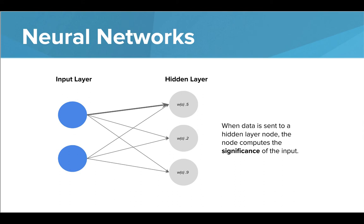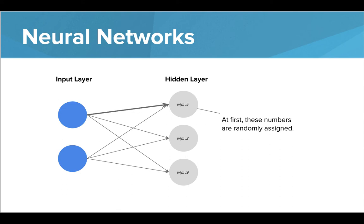For example, a node might try to understand how important or relevant age is to determining a person's music genre choice. Each node will give age a different weight in attempting to understand just how important it is in determining the correct output. These weights are originally assigned randomly to a node, indicating that it's unaware of the relationship between the input and the eventual output.